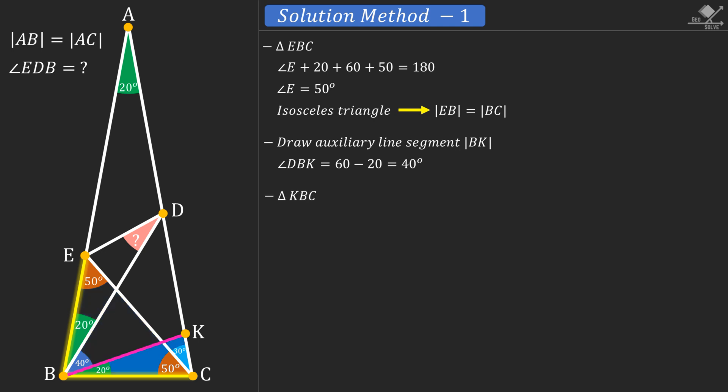Now focus on this triangle. We can find angle K of this triangle using the sum of its internal angles. Solving for K will give us 80 degrees. Let's also see that on the diagram. From here we can see that this is also an isosceles triangle with 80-degree base angles. Therefore, line segments BK and BC will be equal in length.